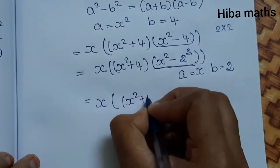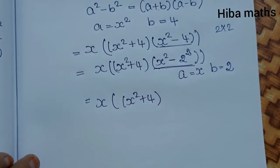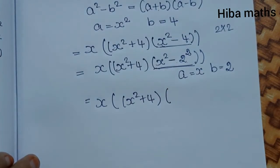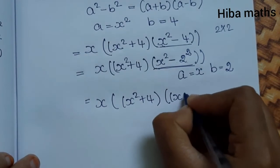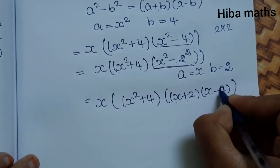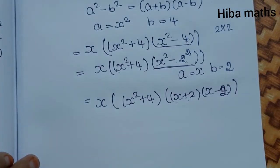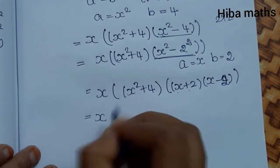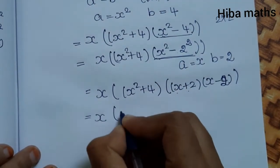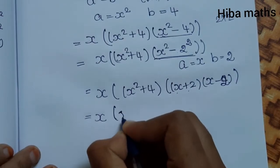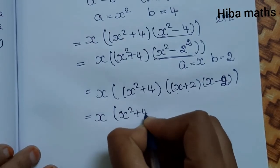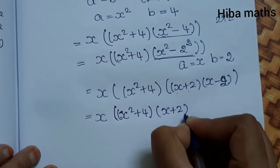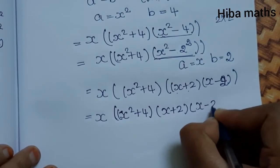So x² + 4 is one factor. Now x² minus 4 can itself be factored: 4 is 2², so x² - 4 = x² - 2². Applying a²-b² again with a = x and b = 2 gives (x+2)(x-2). Therefore the full factorization is (x²+4)(x+2)(x-2).